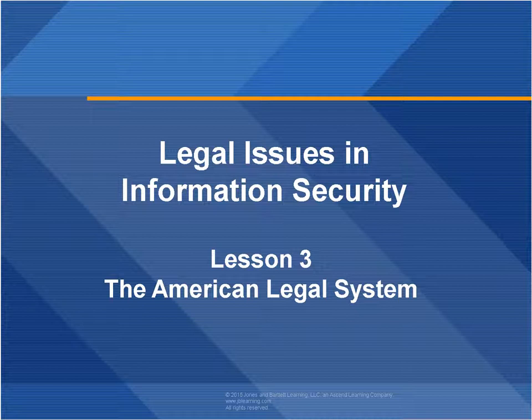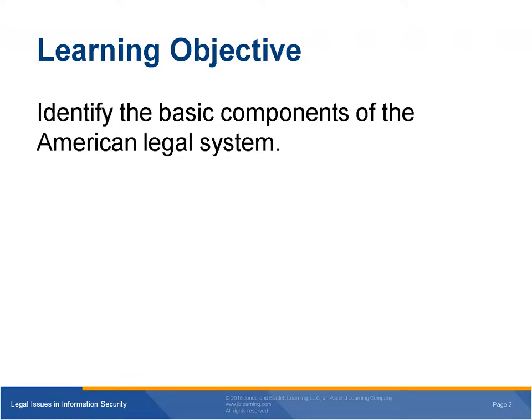The American Legal System, its history and its processes are a fascinating area of study. Many talented judges, attorneys, and law scholars have written excellent books about it. This chapter provides only an overview, but it will outline the framework that can enable you to do further reading and research on this topic. The learning objective for this chapter is to identify the basic components of the American legal system.